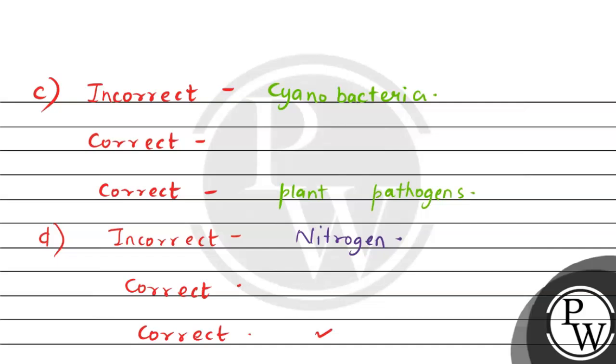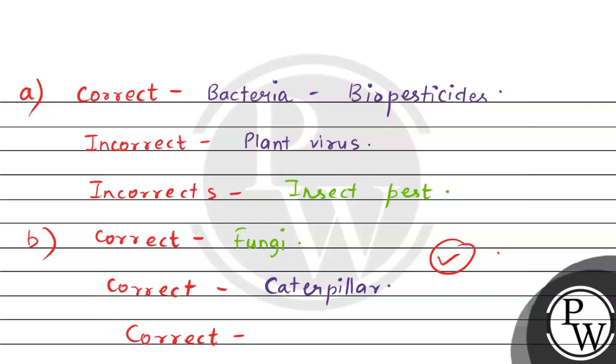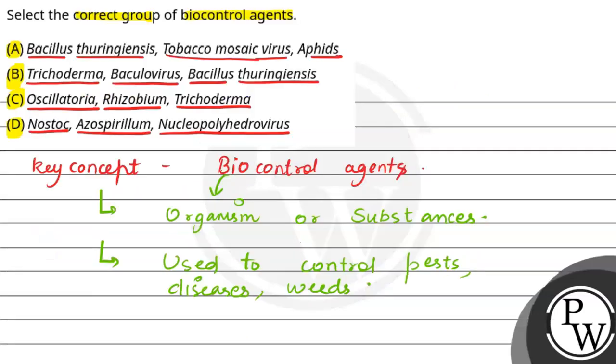Then, which group is the best? That would be option number B. It has all correct options. Option B is correct and other options are incorrect. I hope you have understood. All the best and thank you.